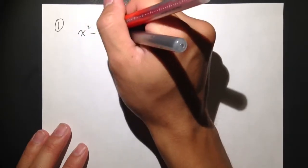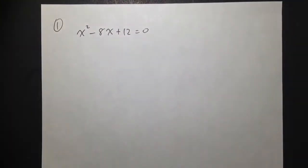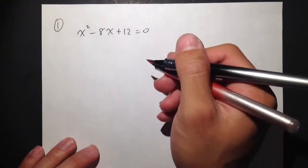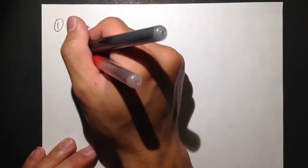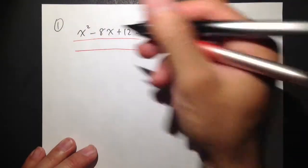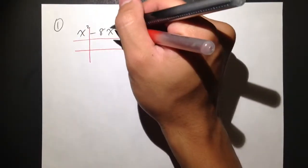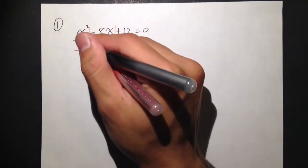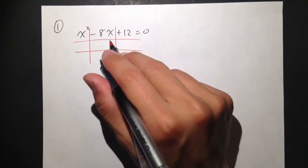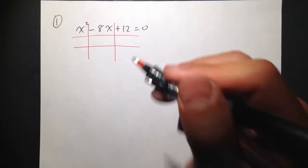x squared minus 8x plus 12 is equal to zero as the first example. I will show you guys how to factor this out by using the tic-tac-toe box to organize the work. So you draw the tic-tac-toe box like this. You put x squared in the first box, negative 8x in the second, and then plus 12 in the third.